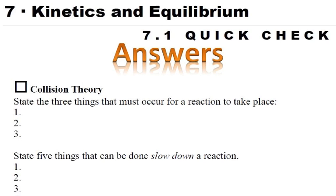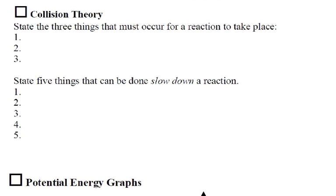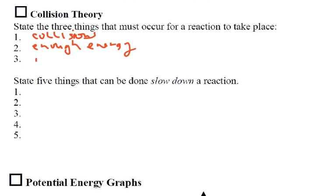On the 7.1 quick check, the first question is asking about state three things that must occur for a reaction to take place. So the idea is that we must have collisions with enough energy, and in the right orientation.